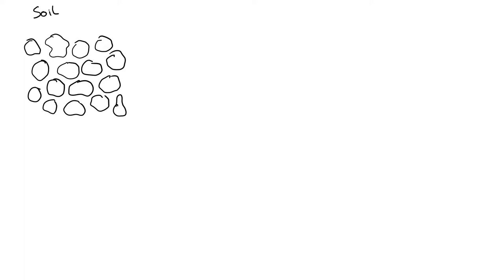Now let's take the lesson from the Hagen-Poiseuille law and see what we can learn about soils. Soil is a complex three-dimensional arrangement of solid particles and pores. If we were to establish flow through this system, we no longer have a simple hollow cylindrical connection for water flow, but rather a tortuous connected pathway which allows the flow of water from one side to the other.